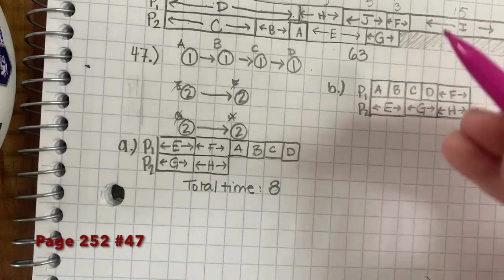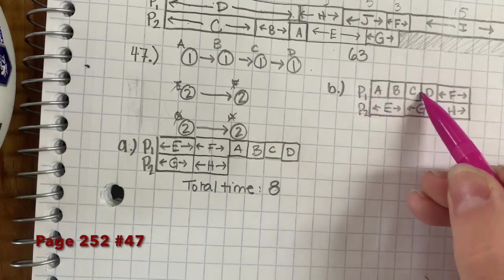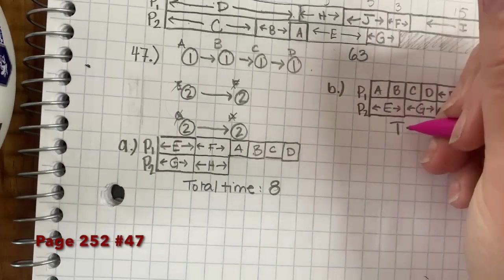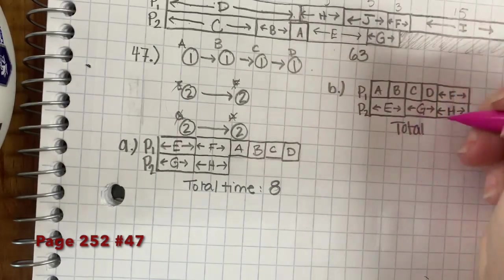And that means that our total time is going to be 1, 2, 3, 4, 6, 6 minutes. Or whatever the time thing is. Total time.